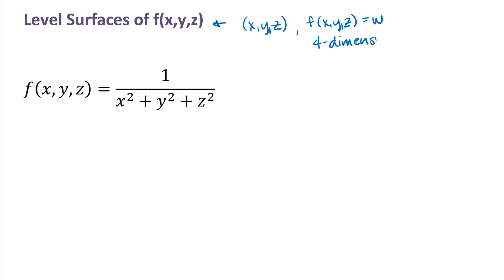That would be pretty hard to draw or understand because we're really used to working and thinking in three-dimensional space. That doesn't mean that this function is not a valid sort of function. It could be a function that gives an output — maybe a temperature or an electrical potential or any kind of numerical value — at a point x, y, z in space. It just means that the graphical representation of the function starts to break down when you get too many variables. You really can't just look at a picture and think about what's going on.